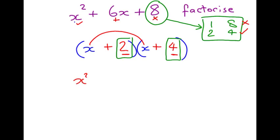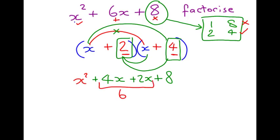x times x, x squared. x times 4. 4x, and it's a plus. 2 times x, 2x, and 2 times 4, 8. We then put it together, and as if by magic, we get x squared plus 6x plus 8, which is what we had, so we know we've got it right. There's our answer in two brackets. I'm going to give you another one.